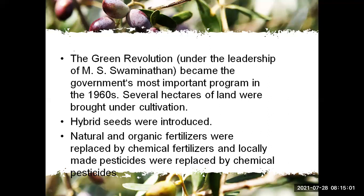This is a main point. Around the 1960s, the Green Revolution was a very important program. Under the leadership of MS Swaminathan, it became the government's most important program. Several hectares of land were brought under cultivation. Hybrid seeds were produced. Natural and organic fertilizers were replaced by chemical fertilizers, and local pesticides were replaced by chemical ones, which increased production. Large chemical factories were established.